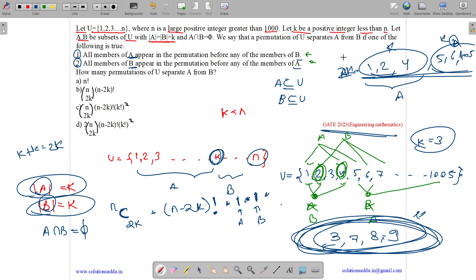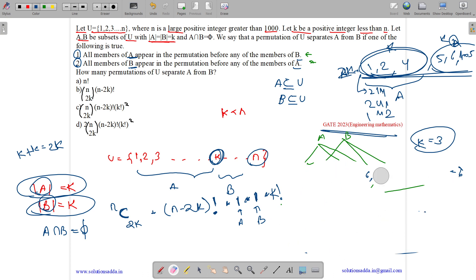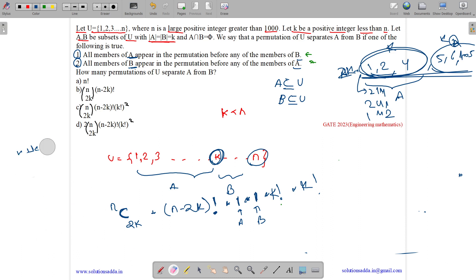Now they can be permitted internally. We can have 1, 2, 4 or 2, 1, 4 or 2, 4, 1 or 1, 4, 2. So we have k permutations for A, so it's k factorial, and we have another k factorial permutations for B. So what is the answer? Let me explain it to you once more and write it more clearly.